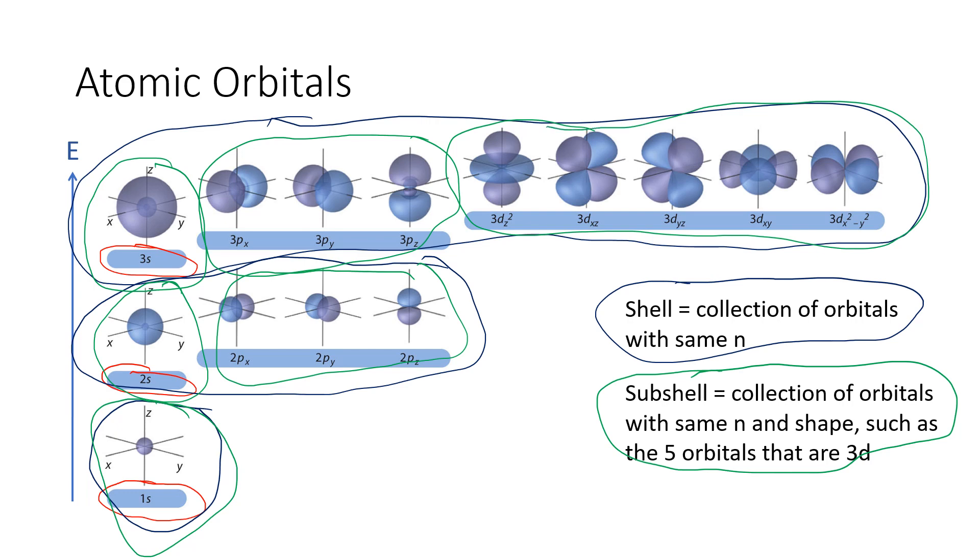Notice there are some strange patterns here. The number of subshells is equal to the number of the shell. So if we're talking the fifth shell, it would have 5 subshells. Also, the number of orbitals that are in a shell will be equal to n squared. So if we're talking the first shell, there's 1 squared, which is 1 orbital. The second shell, we have 2 squared, which is 4 orbitals. And for the third shell, we have 3 squared, which is 9 orbitals.